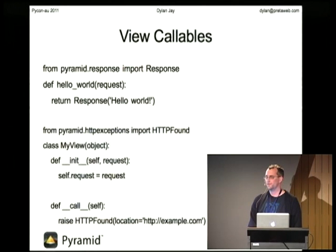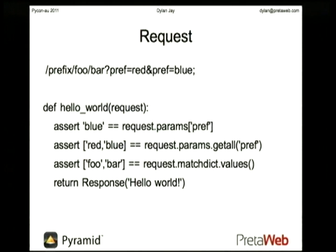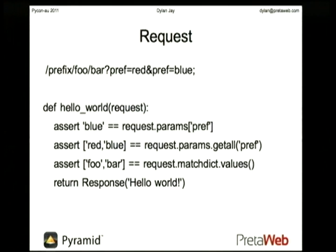You can use other attributes — you can have a single class that functions as many different views. So, the request. Requests are pretty boring; most request objects have the same kind of stuff. You've got a params object that is what's called a multi-dictionary, so it'll handle things like having the same parameter specified twice in the URL — you can get all of them, or it just acts as a dictionary so most of the time you can use it as a dictionary to grab things out. It's got a whole bunch of other stuff for grabbing information about headers and so on.